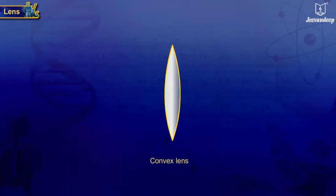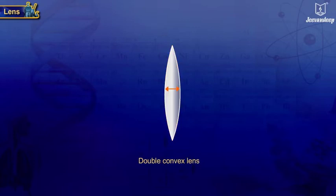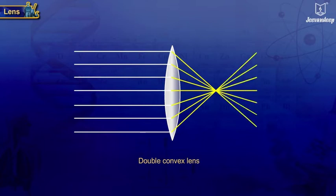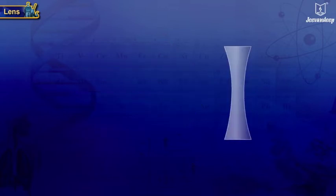A convex lens has both spherical surfaces bulging outwards. It is also called a double convex lens. It is thicker in the middle than at the edges. This lens can converge the light incident on it, so it is called a converging lens.